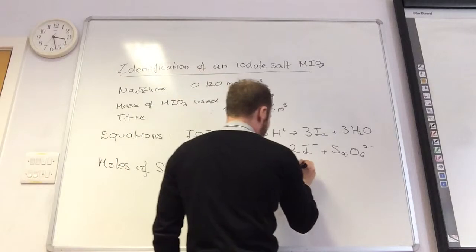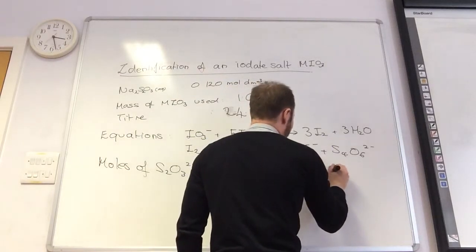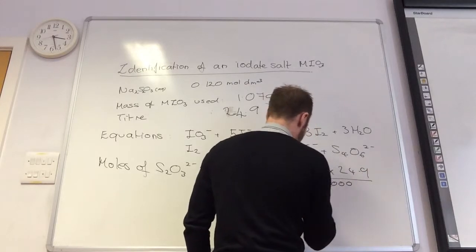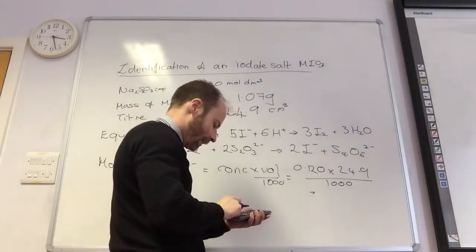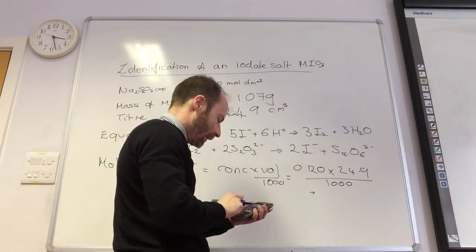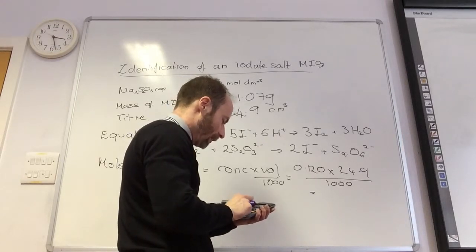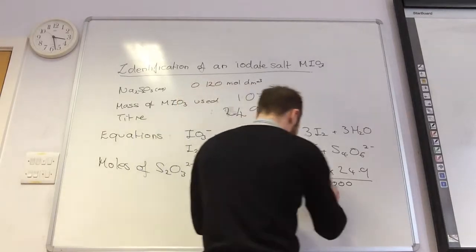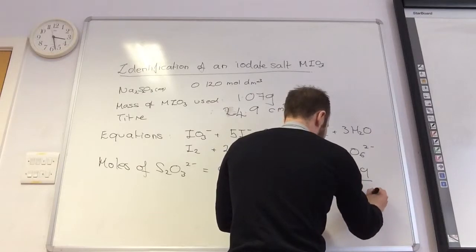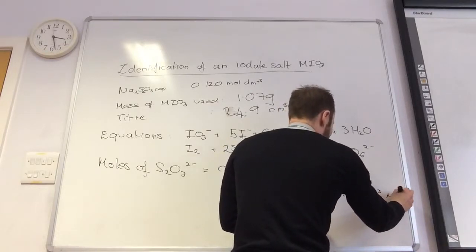My concentration is 0.120. The titre we got was 24.9, and that was over 1,000. So let's do that. That comes to 2.988 times 10 to the minus 3 moles.